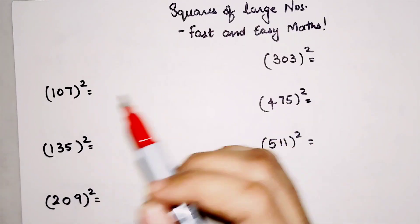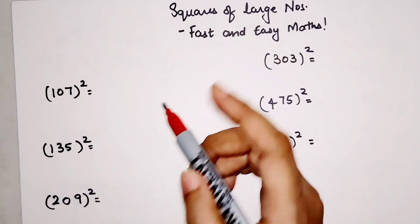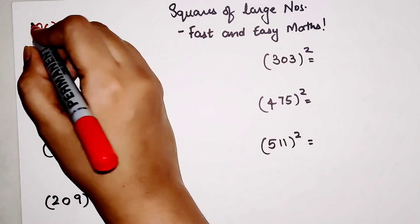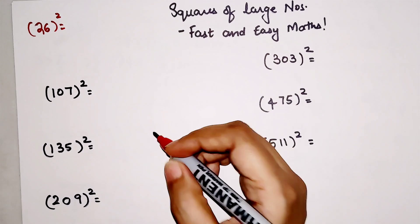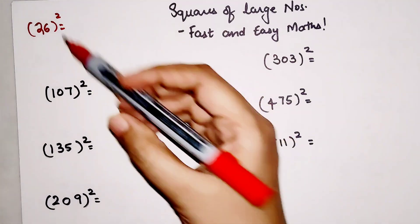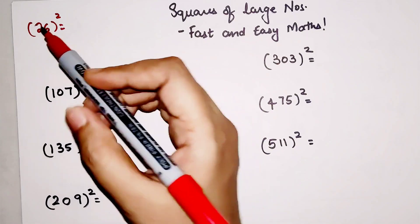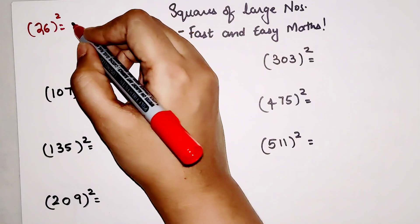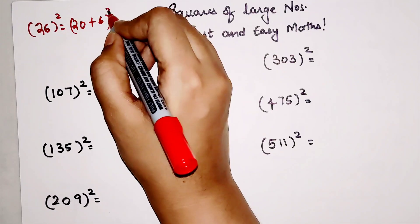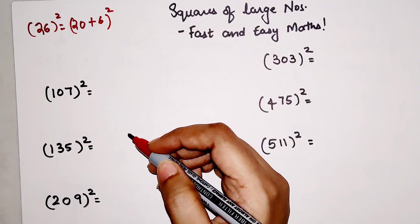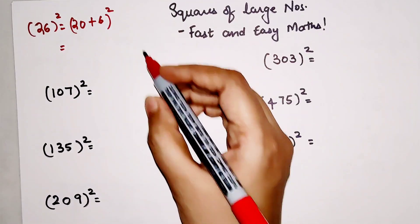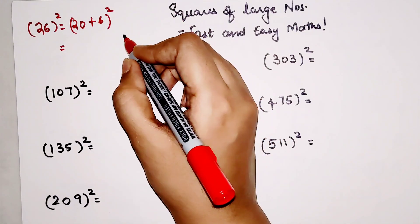Before beginning with this, let's quickly revise the method used to find a small digit square. Let's say if we had to find 26². The method which I am going to use here is also going to correlate with this one, so this is very important. Now can I write this as (20 + 6)²? For your answer, we will write square of 6 which is 36.